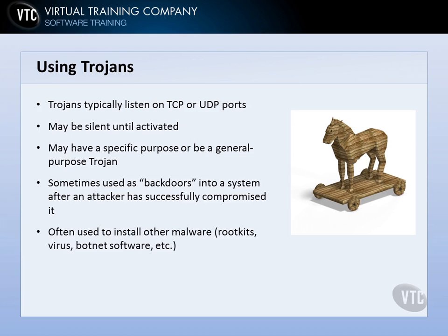A Trojan may have a very specific purpose, like a botnet, or be a very general purpose Trojan — just designed to mess with your system, to destroy data, log keystrokes, and so forth. Sometimes Trojans are used as backdoors into a system after an attacker has successfully hacked it. They've hacked the system, elevated privileges, stolen data, and may leave a Trojan in case everything else is discovered and their primary way back in is cut off.